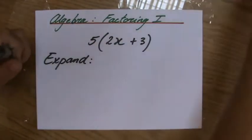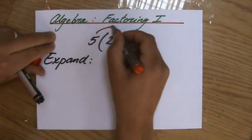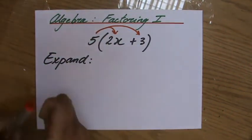Expanding is getting rid of those brackets. So what would you do? You would do 5 times 2x and then 5 times 3.